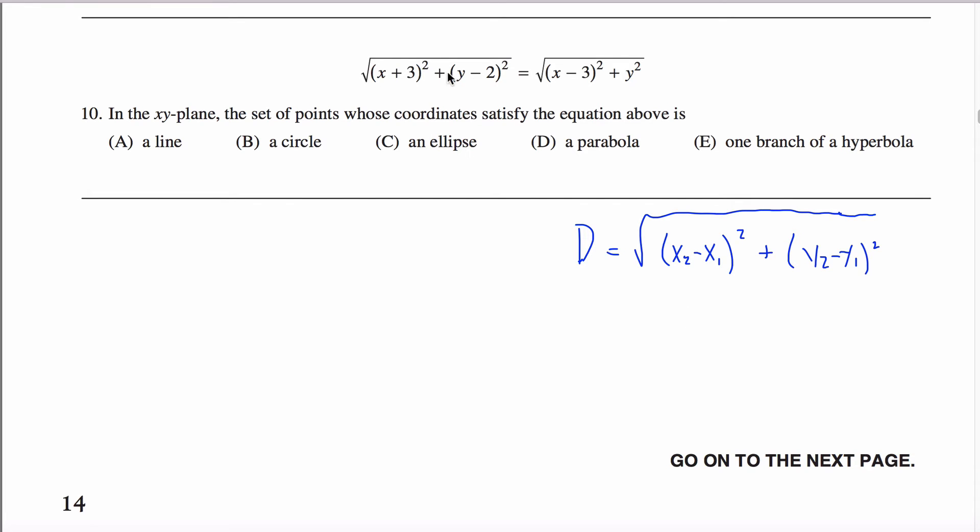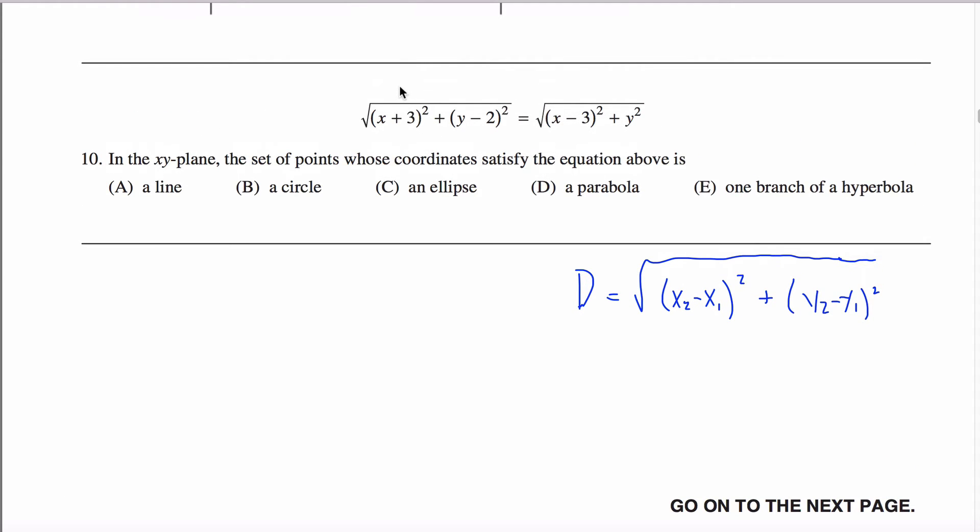If you recognize that this and this both look like this. This over here is the distance formula. Specifically, it tells you how far X, Y is away from the point negative 3, positive 2. And this tells you how far X, Y is from the point positive 3, 0.